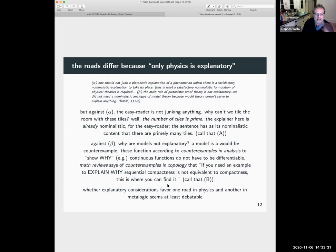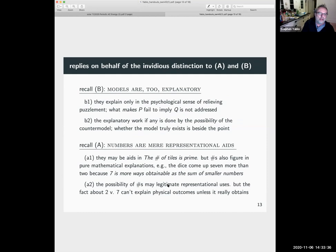So whether explanatory considerations favor one road in physics and another in metal logic could be questioned. I have no firm view about this, but I'll just sort of paddle around in these waters for a bit. So here's some replies on behalf of the invidious distinction to these suggestions I've just made. So the second suggestion was models are too explanatory. Look at what they say in counterexamples in analysis and in topology. Well, one answer might be they explain only in the psychological sense of relieving puzzlement. They might remind us of why Q doesn't follow from P. What makes P fail to imply Q is not addressed. It's not because of the existence of a counter model that the implication fails.